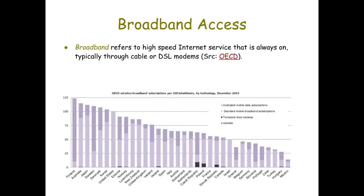The OECD — the Organization for Economic Cooperation and Development — shows that there's about 72% broadband penetration among its members. Within the OECD countries, you can see some of them listed. You'll notice that a few of them — Finland, Australia, Japan, Sweden, Denmark, Korea, and even the United States — are just barely over that 100% mark.